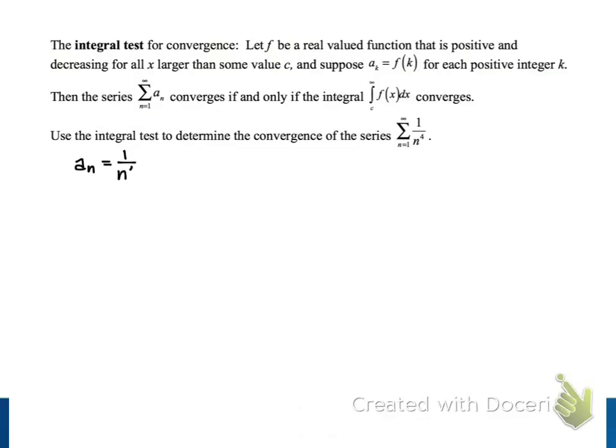So let's start by writing our general term, a sub n equals 1 over n to the fourth. To create a function f of x, we will just replace n with x. So we will use f of x equals 1 over x to the fourth.